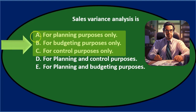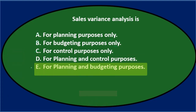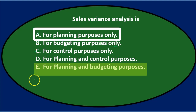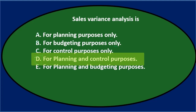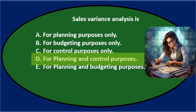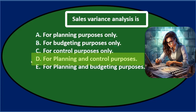The 'onlys' would typically eliminate A, B, and C even without deep knowledge — that would be a good guess. D says for planning and control purposes, combining A and C. E says for planning and budgeting purposes, combining A and B. Of those two, the final answer is D — for planning and control purposes — meaning the sales variance helps us with both planning and control. E seems reasonable, but budgeting is a more comprehensive strategy beyond just the sales variance. Final answer: D, for planning and control purposes.